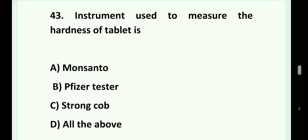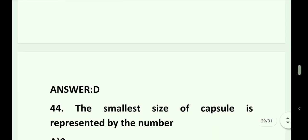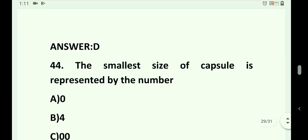Question number 43. Instrument used to measure the hardness of a tablet is: Option A. Monsanto. Option B. Pfizer tester. Option C. Strong Corp. Option D. All of the above. Answer is Option D. That is all of the above.